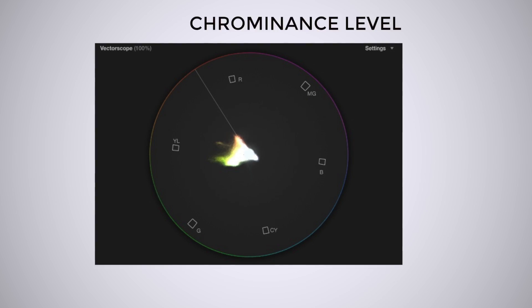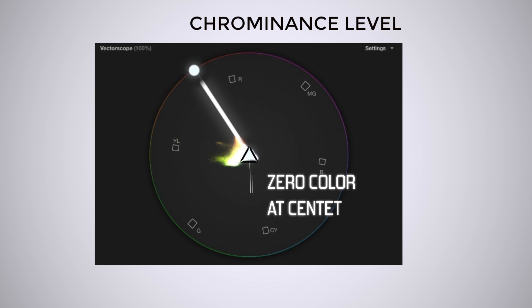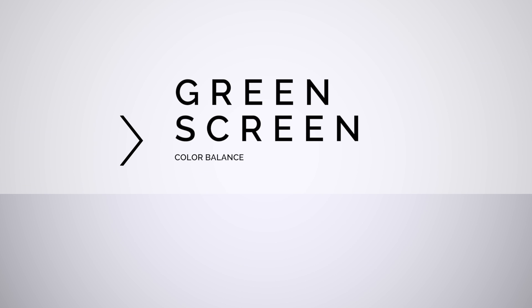The level of chrominance is measured from the center to the outside, so the further this indicator stretches from the center of the chart the stronger the chrominance. Zero color is represented at the center. If you're ever shooting on a green screen, a Vectorscope can be the single most important assisting tool in helping you achieve the best exposure and ensuring ease of keying out your subject.